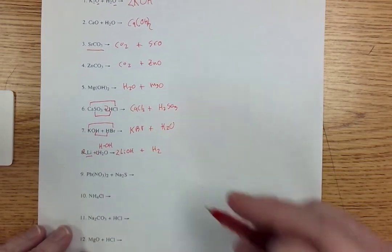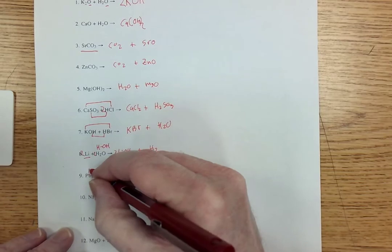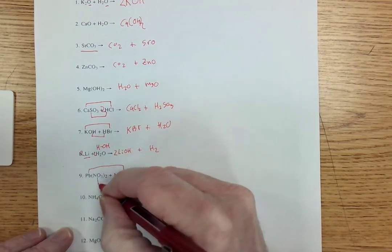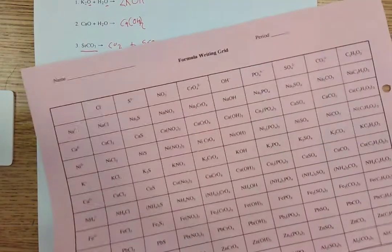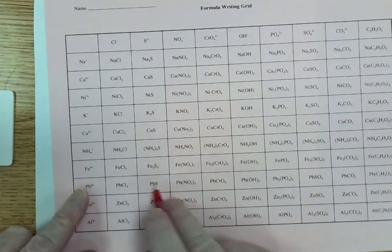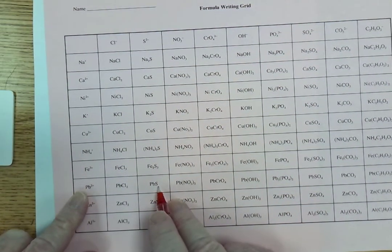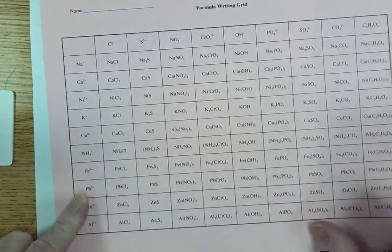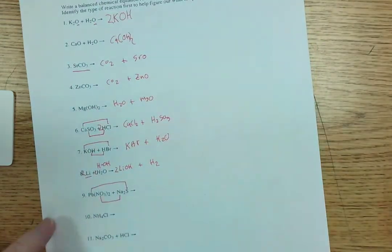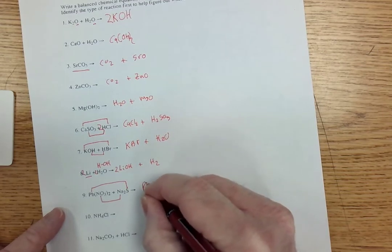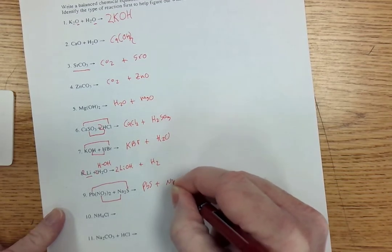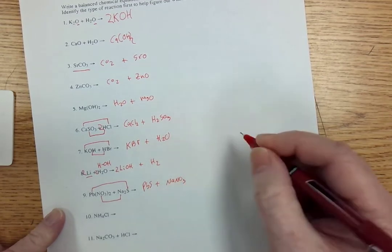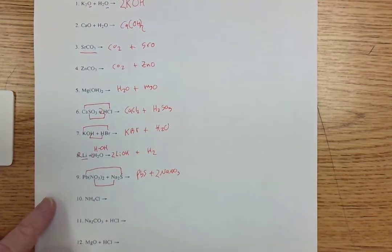Another double replacement. Lead's going to hook up with sulfide. Nitrate's going to hook up with sodium. So down here, I've got lead with sulfide. That's PbS. Sodium with nitrate. That's NaNO3. Always be looking at your formula writing grid. PbS plus NaNO3. To make that work, I'm going to have a two there for balancing.